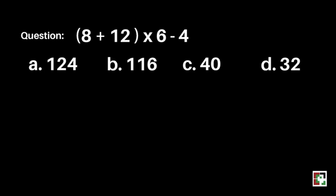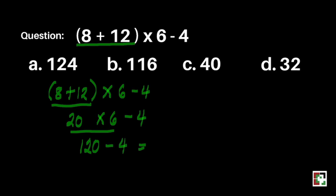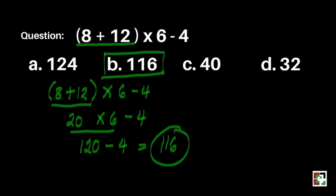Now let's have the second question: the quantity of 8 plus 12, times 6 minus 4. What do we do first? Of course, we do the groupings. 8 plus 12 is equal to 20. So we have 20 times 6 minus 4. Next, we multiply: 20 times 6 is 120 minus 4. Then 120 minus 4 is equal to 116. Our answer for this question is letter B.